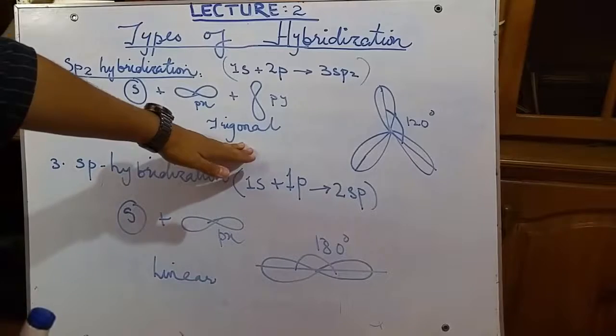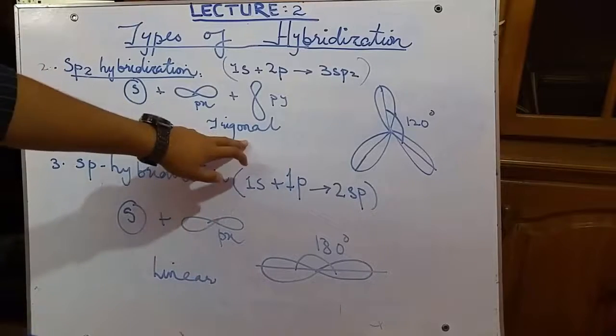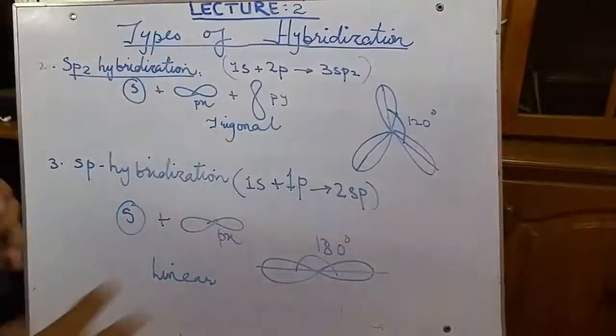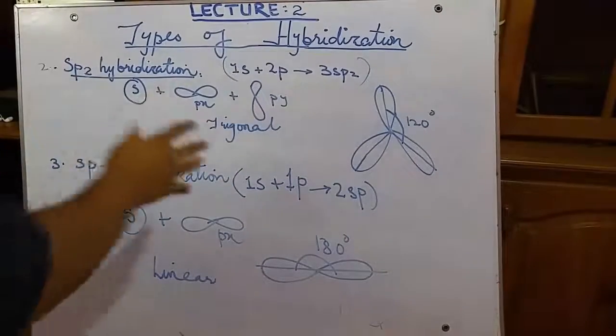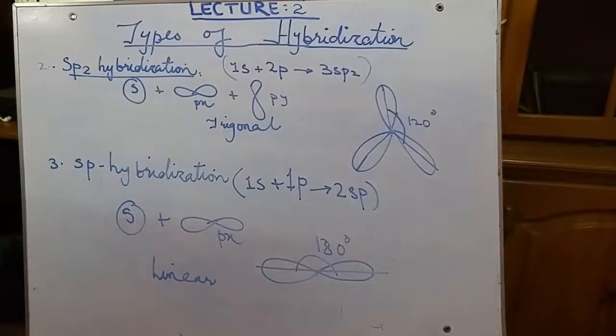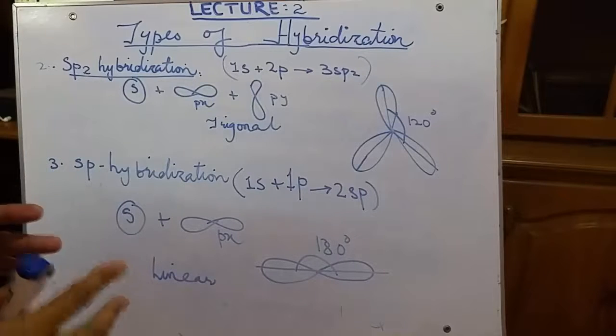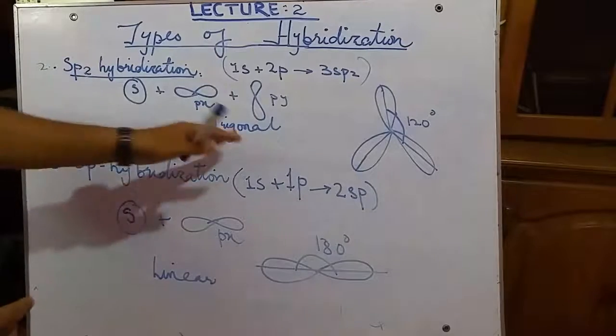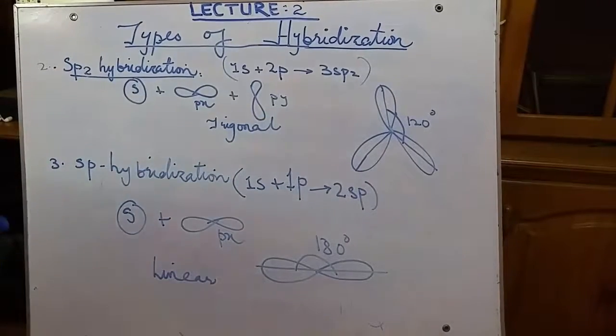The shape of the sp2 hybridization is trigonal and the bond angle between the hybrid orbitals is 120 degrees. From the exam point of view, you have to learn the shapes and the bond angle. And this will further help us in identifying the compounds which are having different types of hybridization. And we have to draw those structures and write upon them. From exam point of view, do learn these shapes and the bond angle.